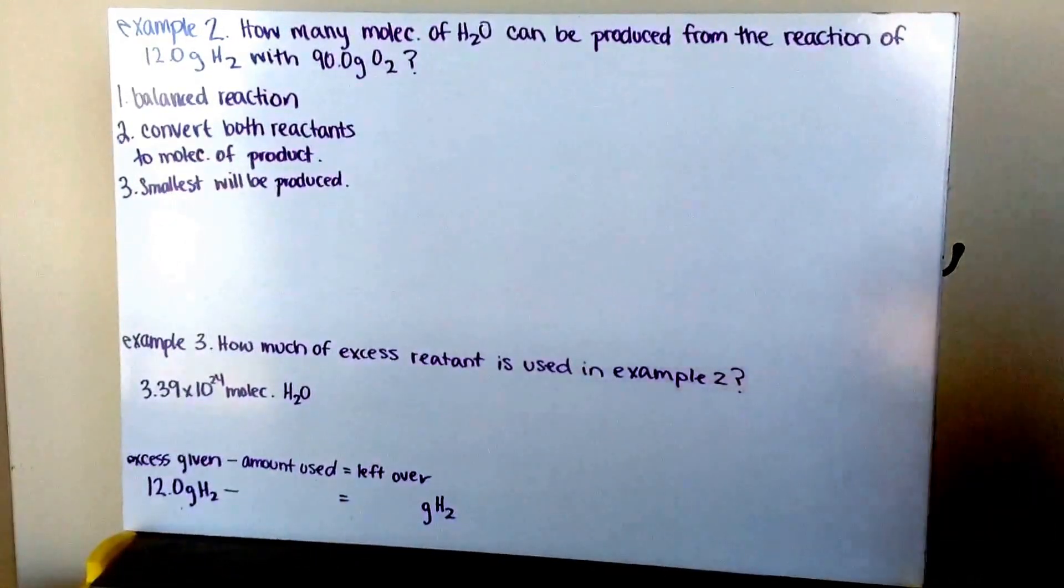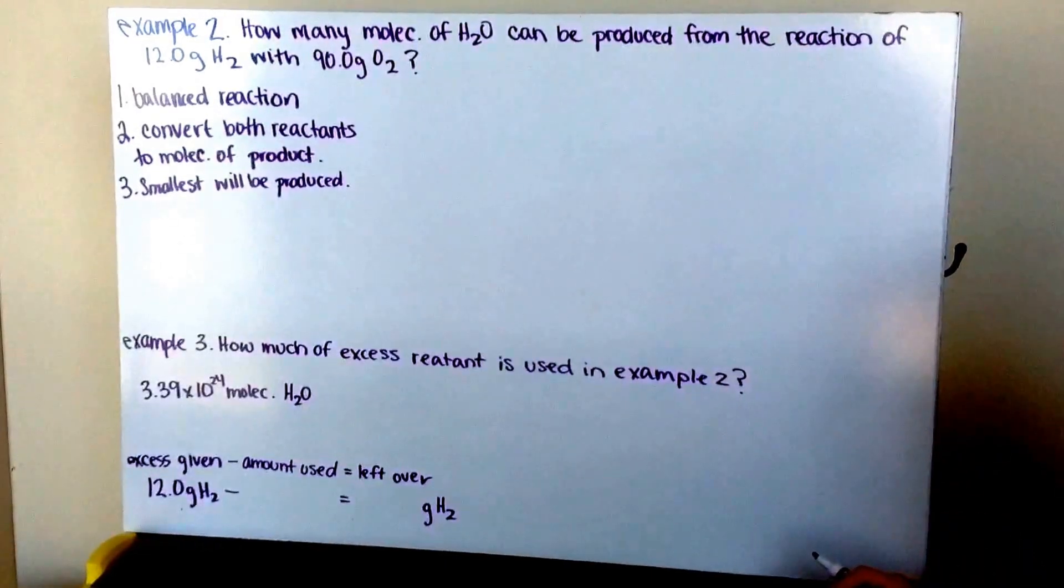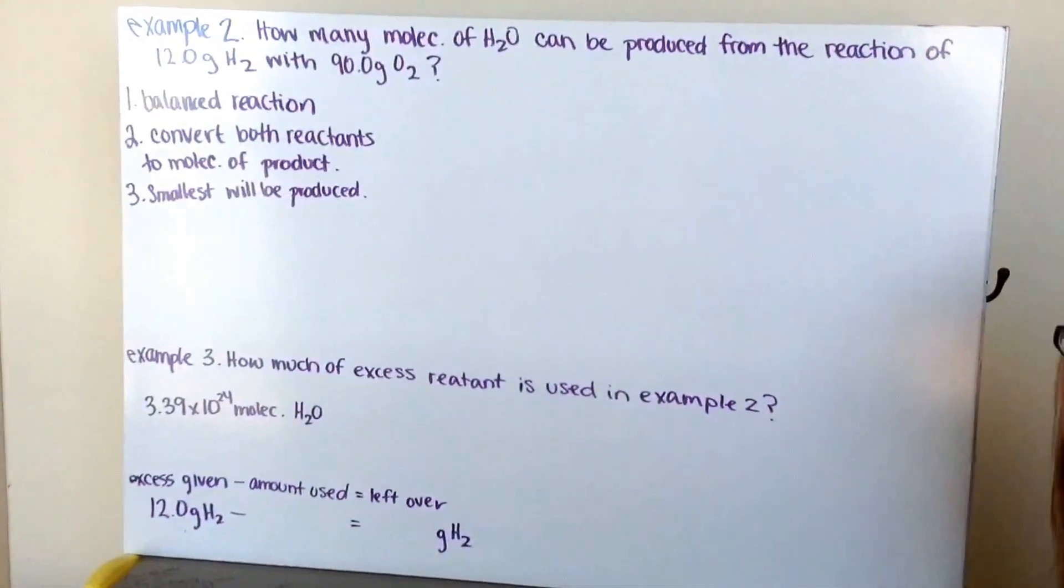Let's go through example number 2. How many molecules of water can be produced from the reaction of 12 grams of hydrogen with 90.0 grams of oxygen? Well, first up, I need to write my balanced reaction.